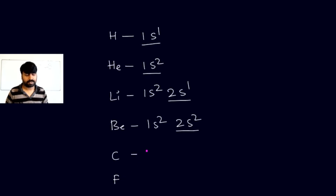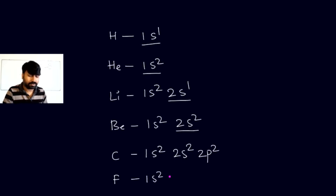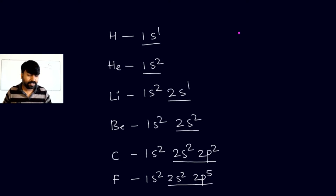Let's also take carbon and fluorine. Carbon's configuration is 1s² 2s² 2p², giving a total of six electrons, with four electrons in the last shell (2s² 2p²). Fluorine's configuration is 1s² 2s² 2p⁵, with seven electrons in the last shell (2s² 2p⁵).